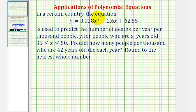Welcome to an application of a polynomial equation, or more specifically in this case, a quadratic equation. In a certain country, the equation given here is used to predict the number of deaths per year per thousand people, y, for people who are x years old on the interval from 35 to 50.